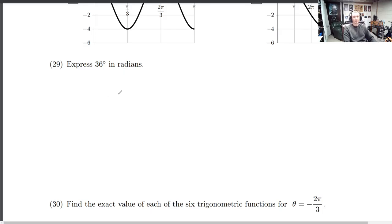express 36 degrees in radians. So if you have something in radians or something in degrees and you want to go the other way around, there's a couple ways to do this. From degrees back to radians, you're going to multiply by pi over 180 degrees. The other way, if you have something in radians and you want to go to degrees, you're going to multiply by 180 degrees over pi.